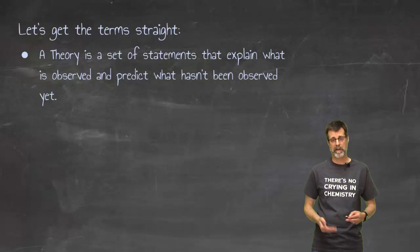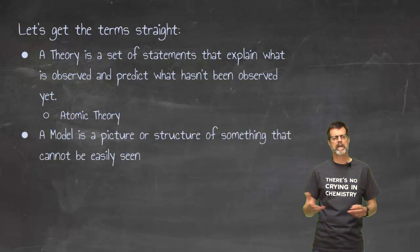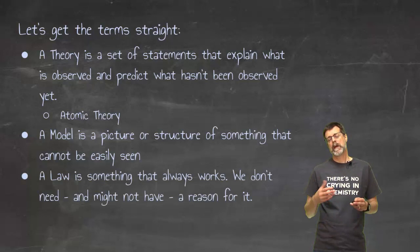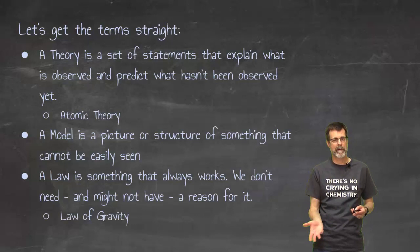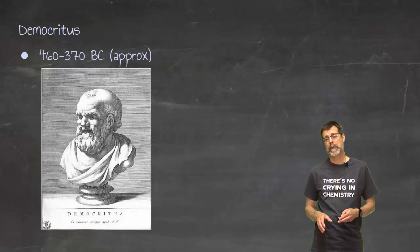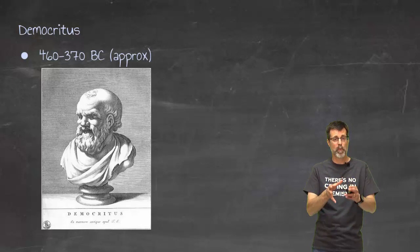Atomic theory is going to be the one we're focused on. A model is the picture that we draw or the little thing that we can build. A law is something that we know works every single time and we don't necessarily have a need to explain it. For example, the law of gravity - I know that gravity is there. Do I know why gravity is there? I don't need to.